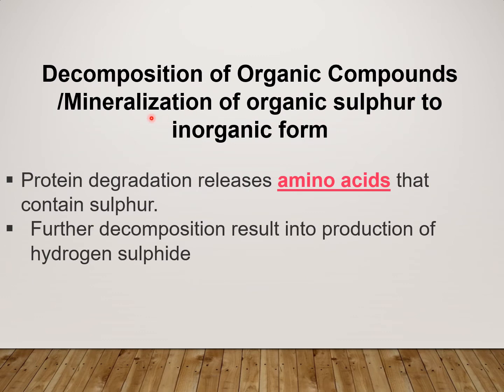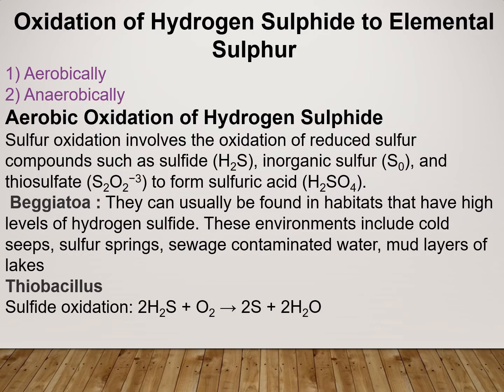The first step is the mineralization of organic Sulphur to inorganic form, or decomposition of organic compounds. Whatever organic compound is present in the living cell — such as protein, which contains Sulphur-containing amino acids — the degradation of protein takes place, resulting in production of amino acids. Further decomposition then results in the production of Hydrogen Sulphide.